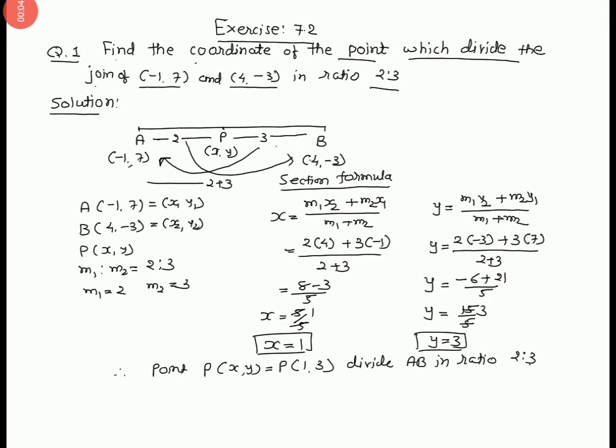Now we start Exercise 7.2, Question number 1. Find the coordinate of the point which divides the join of (-1, 7) and (4, -3) in the ratio 2:3.